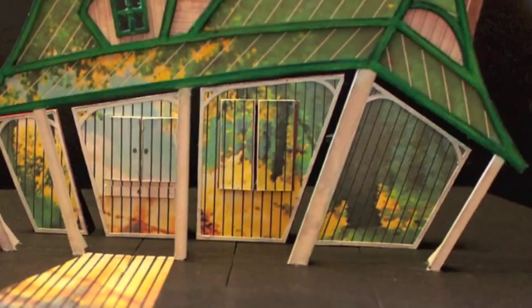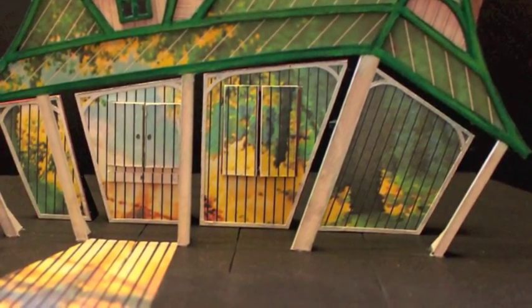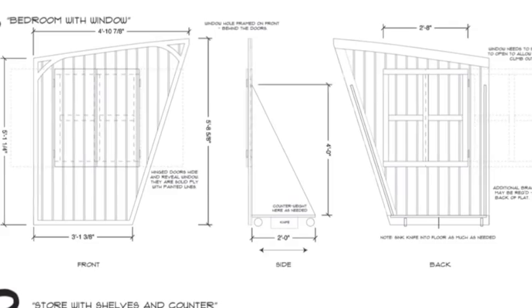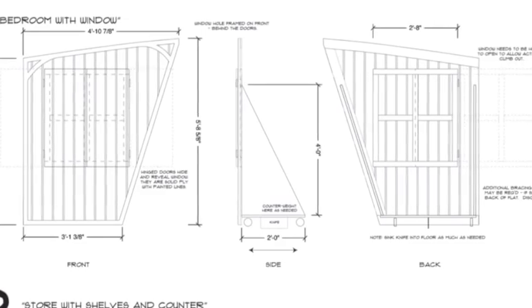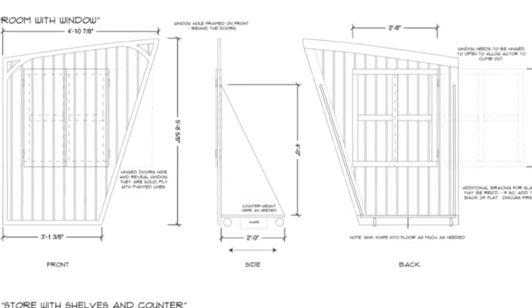Stage left of that defines Anne's bedroom. The upstage wall has a window which can be opened, and a small bed will be brought in from offstage to give her a place to sleep. Like the kitchen, this wall also moves up and downstage.